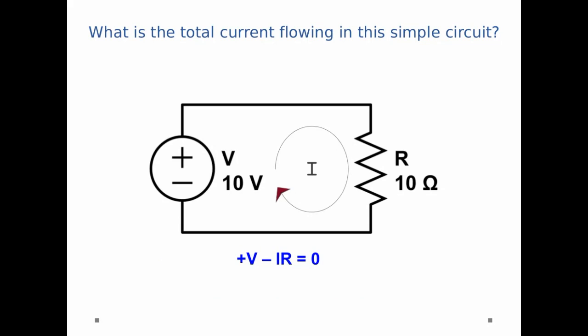I get plus V minus IR, because I'm moving with the current, is equal to 0 as I trace around the circuit. And then I can just rearrange everything a little bit, and I get I equals V divided by R, which is 1 amp, which is exactly what we expect from last time.